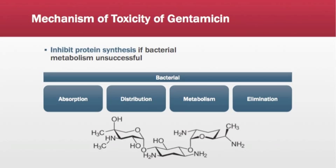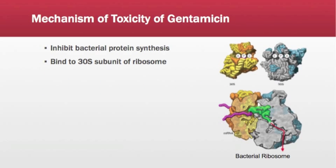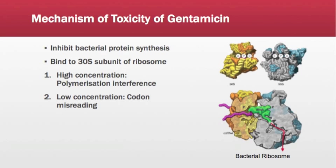If bacterial metabolism is indeed unsuccessful, bacterial protein synthesis will be inhibited. Gentamicin inhibits bacterial protein synthesis by irreversibly binding to the 30S subunit of the bacterial ribosome. At low concentration, gentamicin causes misreading of codons and impairs proofreading, leading to production of nonsense proteins. At higher concentrations, gentamicin also interferes with amino acid polymerization and therefore interferes with peptide elongation.